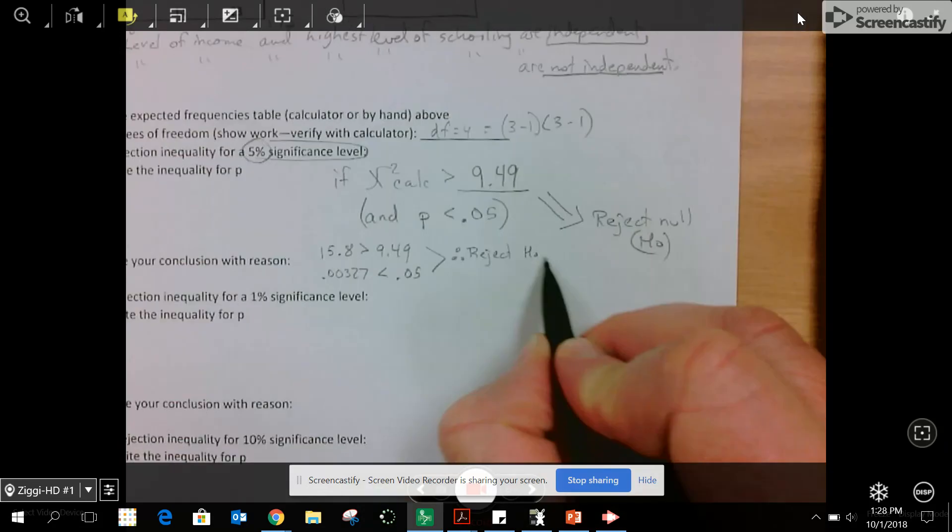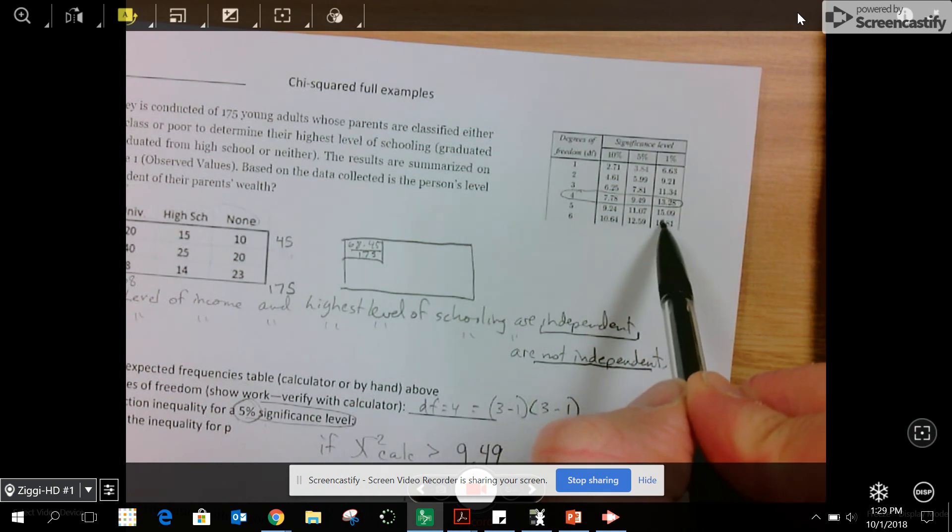The only thing that changes as you go further down this list is your rejection inequality and your P value. P should be less than 0.01. The rejection inequality for 1% at four degrees of freedom is 13.28. As you can see, the chi-squared doesn't change. We would still reject at that level. At 10%, the only thing that changes is 7.7, and we definitely reject.